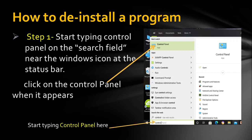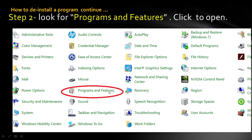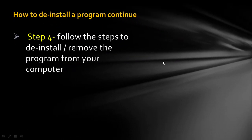To uninstall a program, go to the Start menu and type 'Control Panel'. Once it appears, click on it. In the Control Panel window, choose 'Programs and Features'. When that window appears, find and highlight the program you want to uninstall. Click Uninstall and follow the steps to remove the program from your computer.